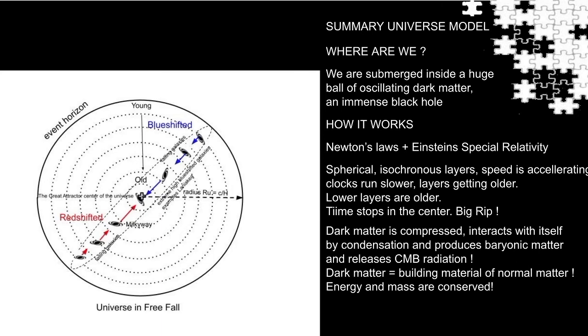Dark matter is the building material of normal matter. Energy and mass are conserved. A recyclic cosmology. And the name of this hypothetical universe model is, in Dutch, heelal in vrije val. Or in English, universe in freefall.